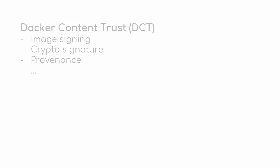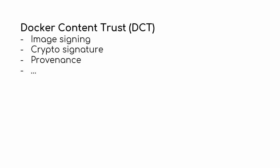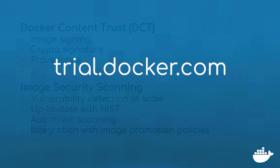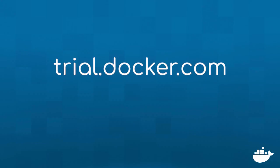Signing images gives images a cryptographic signature so you can be sure you're getting what you want — provenance and all that. And scanning is vulnerability awareness at scale. Docker EE is always up to date with the latest NIST database of known vulnerabilities, and you can automatically scan images and even build policies that automate movement of software along your pipeline based on the result of those scans. Real enterprise stuff. To try out Docker Enterprise Edition for yourself, head over to trial.docker.com.